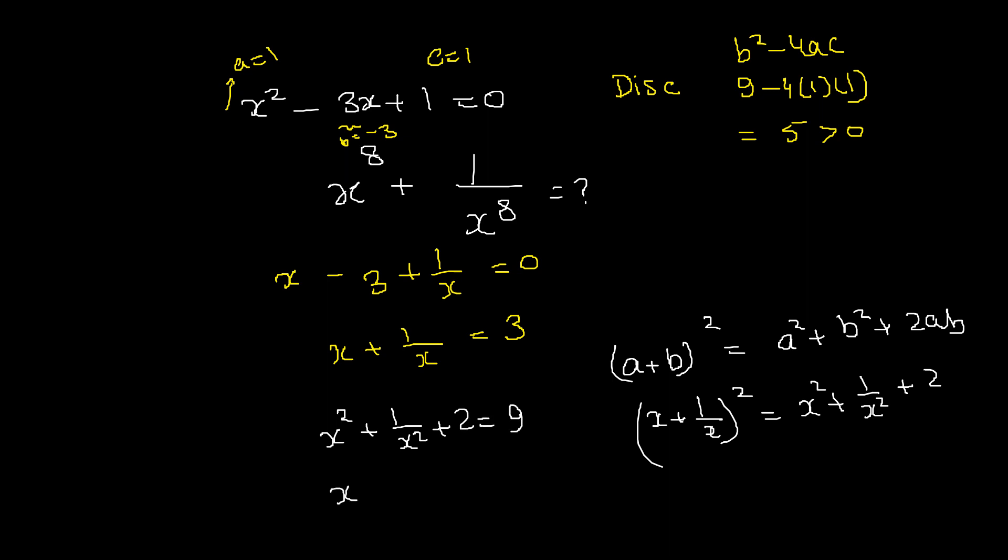Now we repeat the same step to get x⁴. You have to find x⁸, so two times you have to do this procedure. We got x² + 1/x² = 7, and by taking square on both sides, you will get x⁴ + 1/x⁴ + 2 = 49, which gives x⁴ + 1/x⁴ = 47.